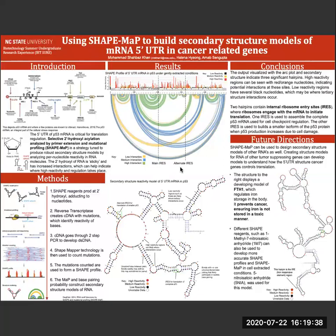These models can be used to create a deeper understanding of how mRNA regulation works in genes important in preventing cancer. For the future directions of this project, modeling other tumor suppressing genes such as FTH1 can help us understand the mechanisms of other cancer-related genes. Another direction is using different shape reagents to potentially develop more accurate shape profiles and secondary structure models.